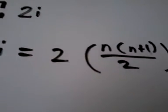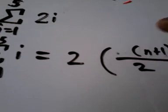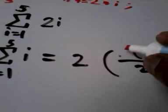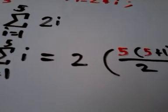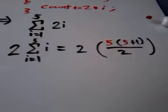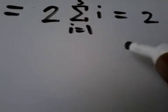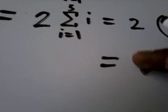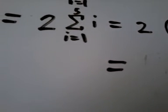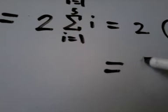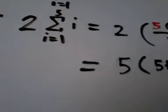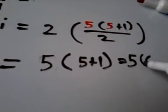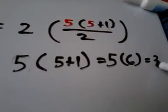In this case, our n is 5. So now we just get 5 times 5 plus 1, which equals 5 times 6, which equals 30.